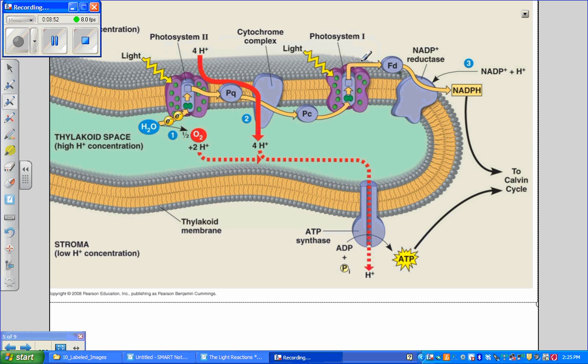And the energy of that electron is used to create NADPH, another product needed for the Calvin cycle. As electrons travel along the electron transport chain, protons are pumped from outside of the stroma into the thylakoid space, giving it a high proton concentration and a low pH. These protons have only one way of leaving the thylakoid space and that's through ATP synthase.